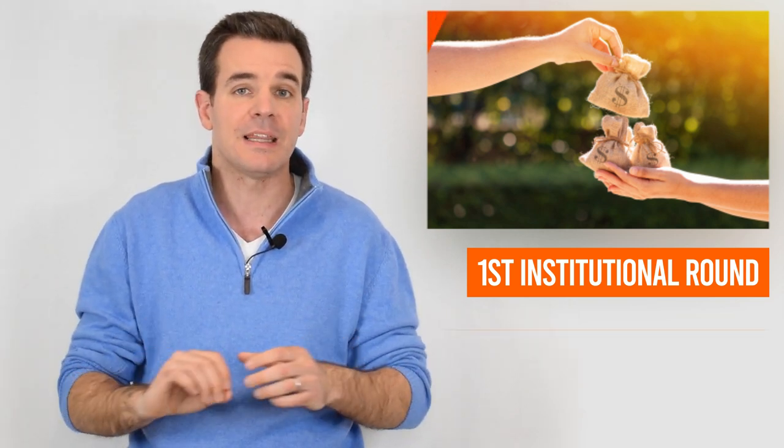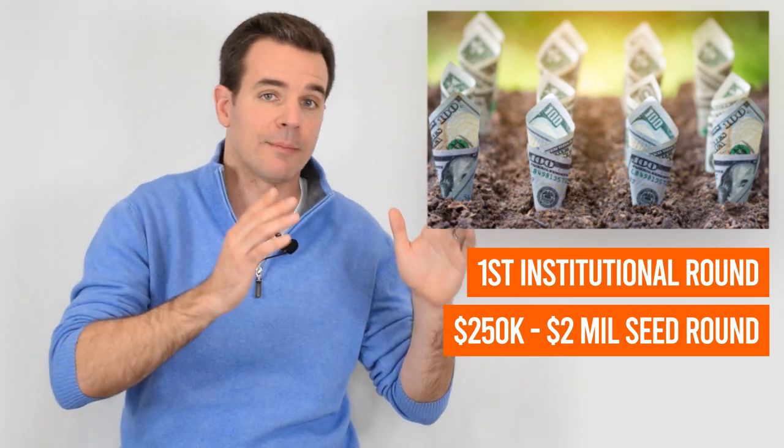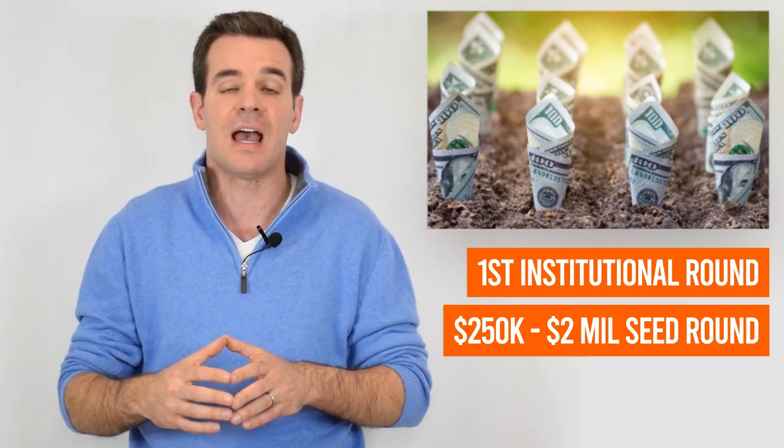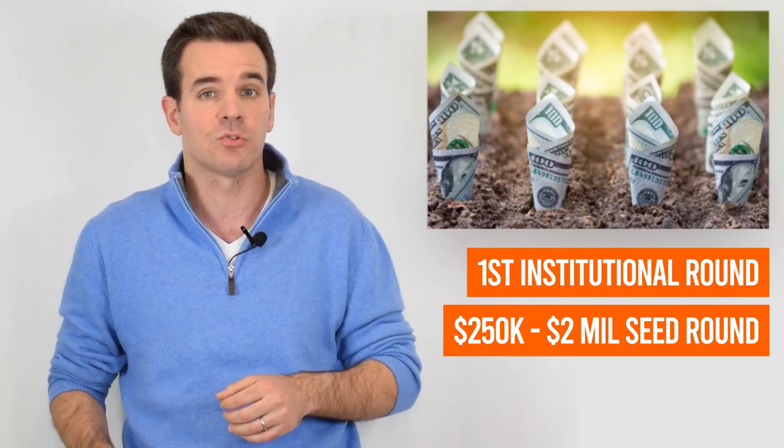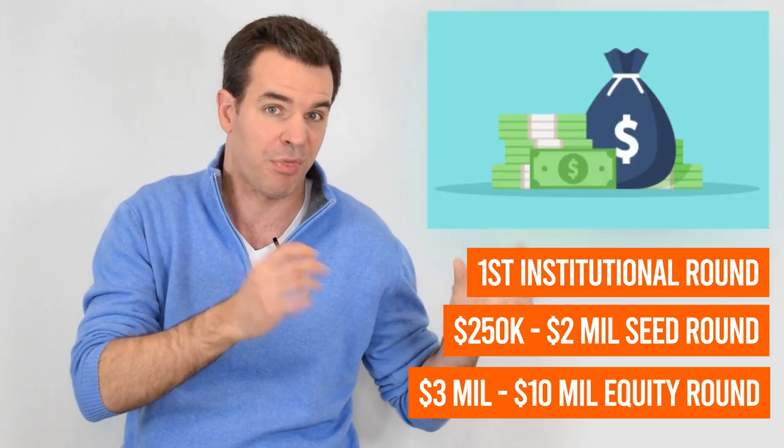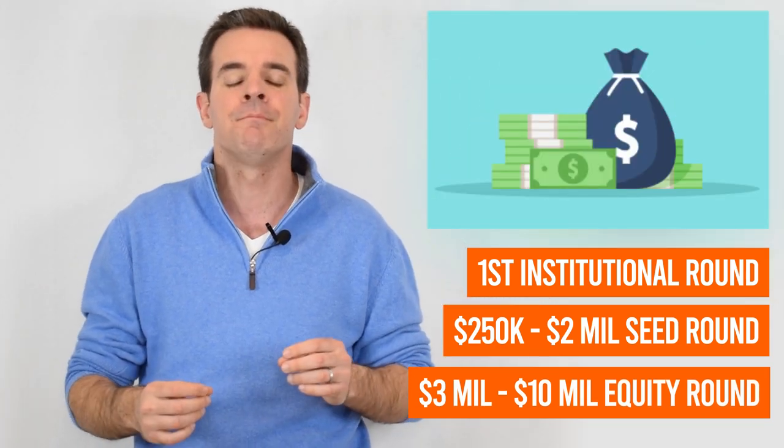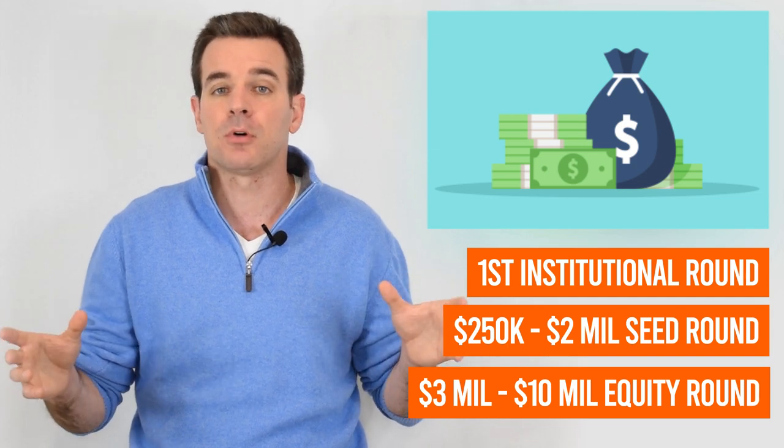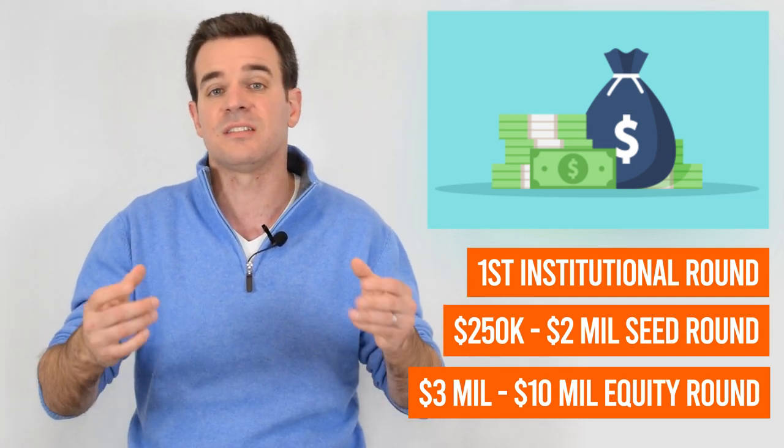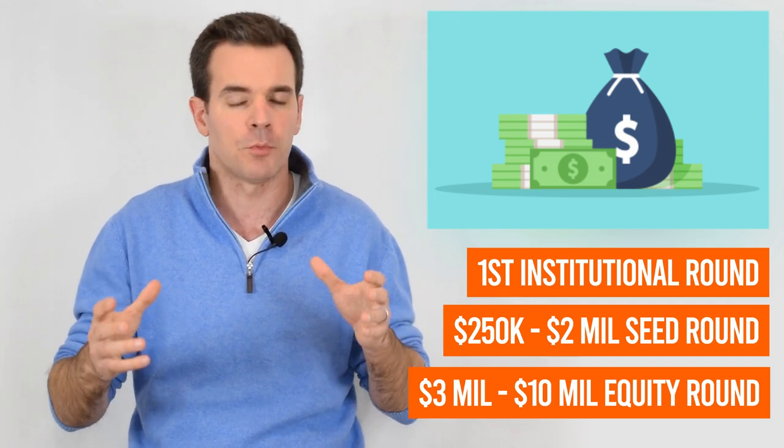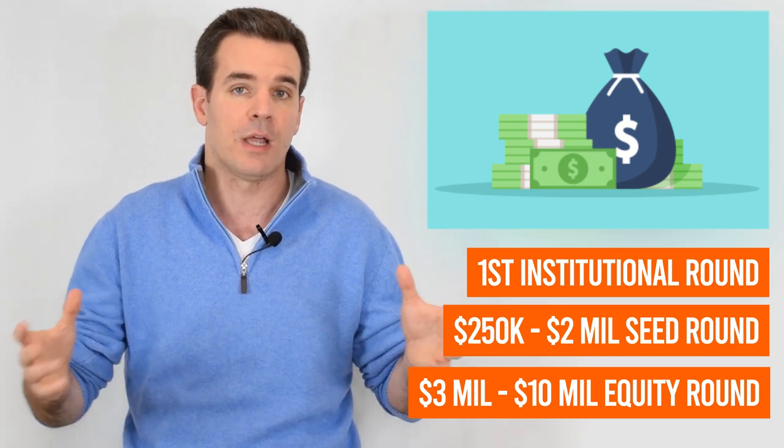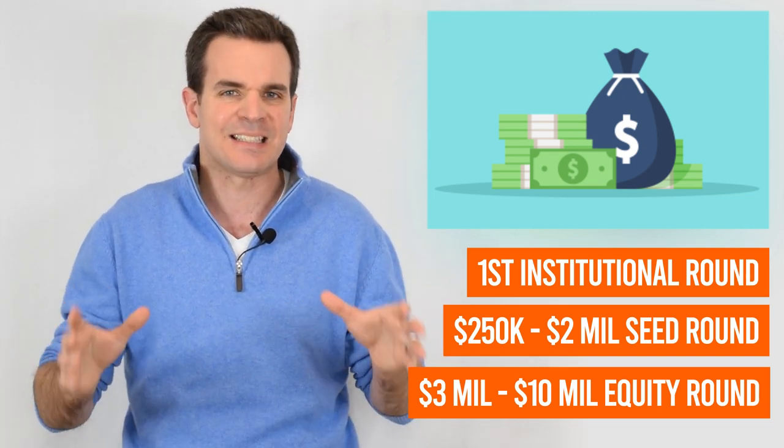Seed Rounds, typically, they go anywhere from $250,000 all the way up to $2 million, and the valuation is all over the place where you're going to have sometimes an equity round where you're pricing the round, and that could be anywhere between going from $3 million all the way to $10 million. In essence, what you're doing and many people are doing is they're just using a convertible note or a safe note, which is taking the money in some form of debt that would convert later on into equity ownership. That's essentially a Seed Round.